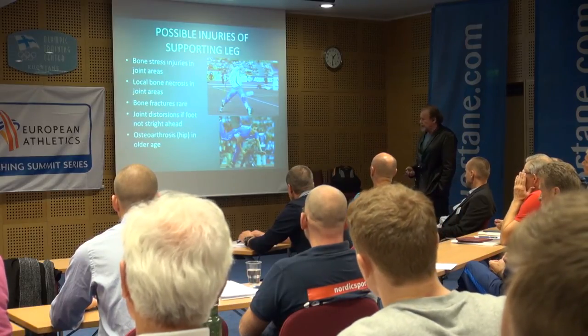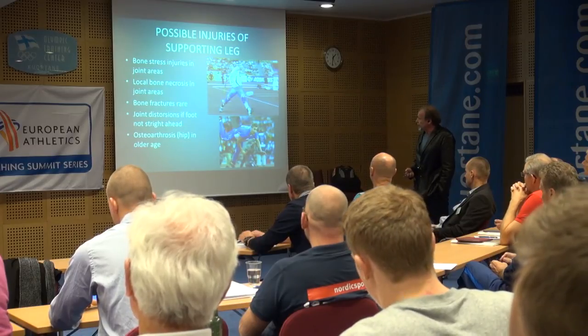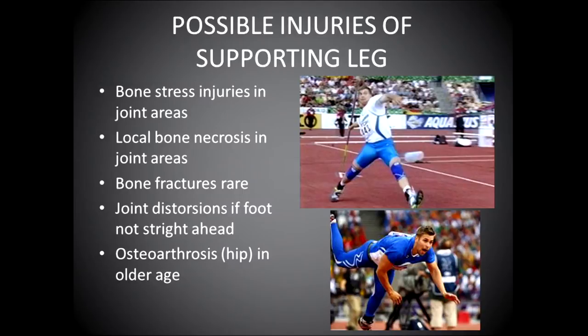Possible injuries in the supporting leg can be bone stress, especially in joint areas. Even local bone necrosis can appear, but it's not so usual. Fractures are also possible, and especially if the joint is in the wrong position, distortion of joints is possible. In older age, osteoarthrosis and degenerative changes can be a problem for the athlete later on.